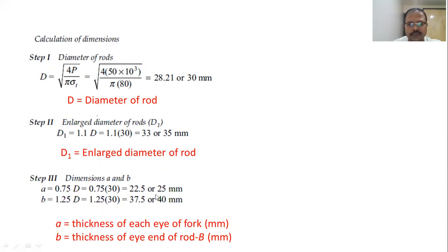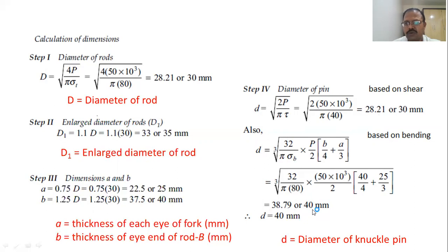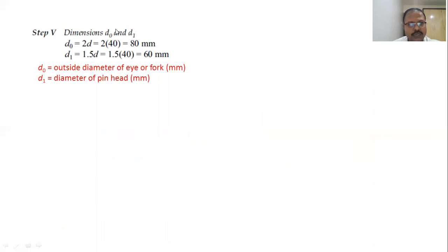After calculating A and B, we calculate the diameter of the knuckle pin based on shear and bending criteria. Using the shear stress equation, the diameter comes out to be 28.21 mm, rounded up to 30 mm. Using the bending stress criteria, the diameter comes out to be 38.79 mm, rounded up to 40 mm. Since we must select the maximum value — 30 mm from shear and 40 mm from bending — the diameter of the knuckle pin is taken as 40 mm.